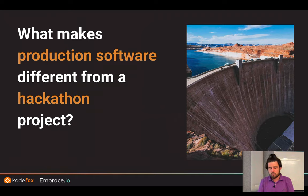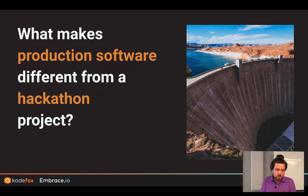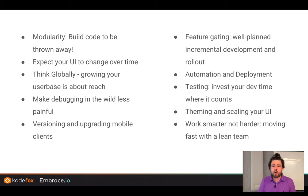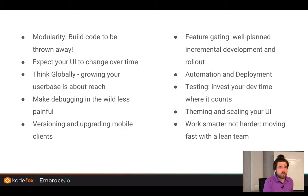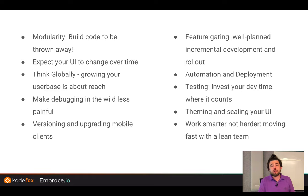The question I'd like you to ask yourself is: what makes production software different from a hackathon or hobby project? Production software operates at scale, is well-architected, and has scalability. I've picked a few things important in the context of mobile apps — modularity, UI, global reach, debugging, theming, and feature-gating. We're going to dive into these today.